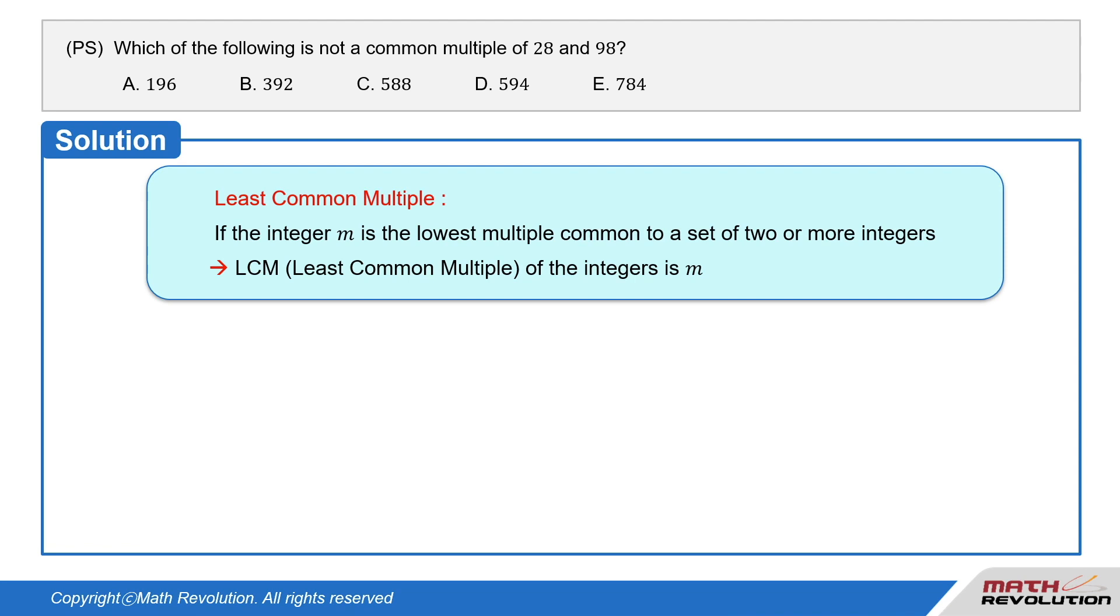Solution. Least common multiple. If the integer M is the lowest multiple that is common to a set of two or more integers, then the LCM, least common multiple, of the numbers is M.